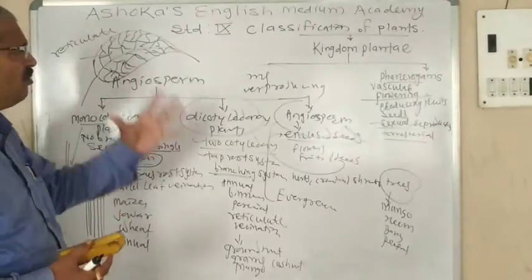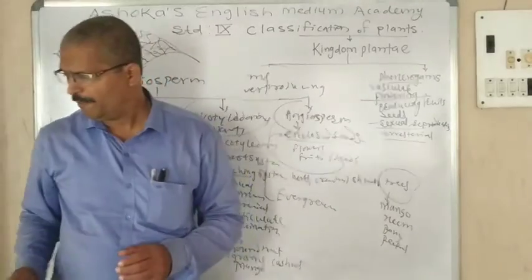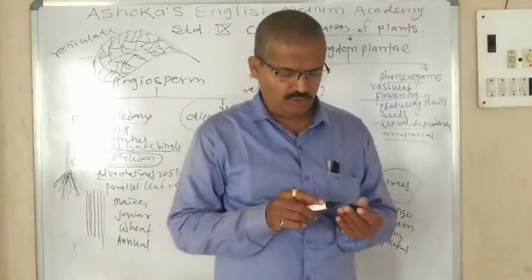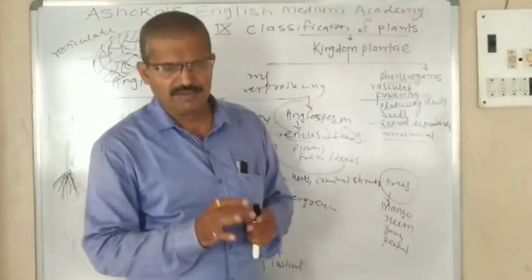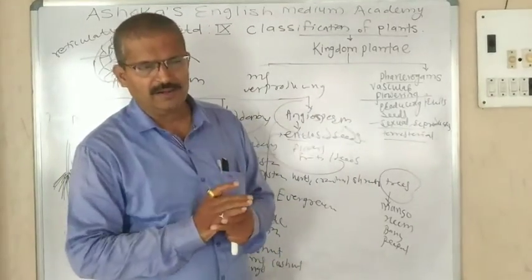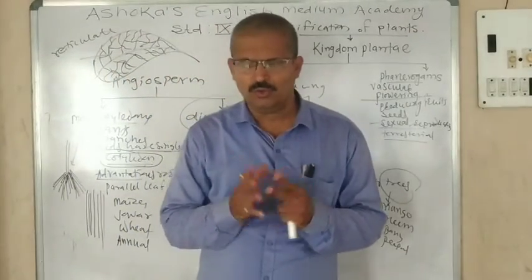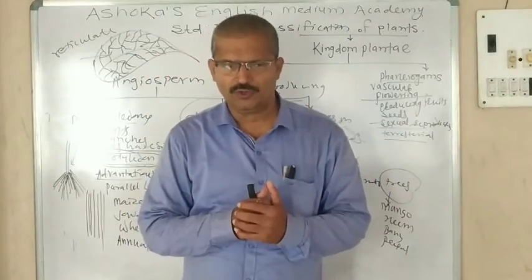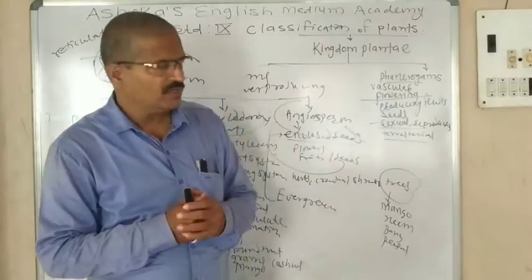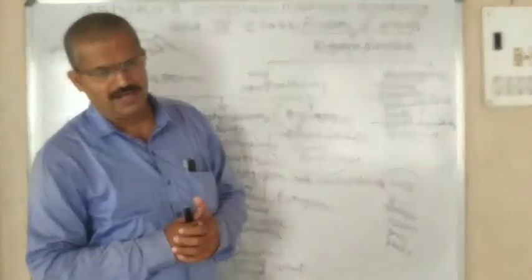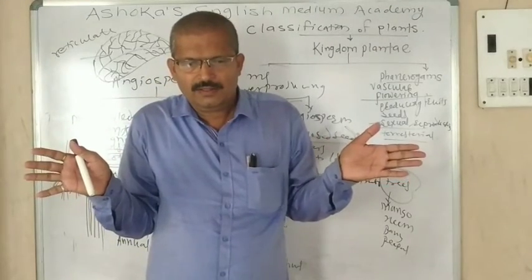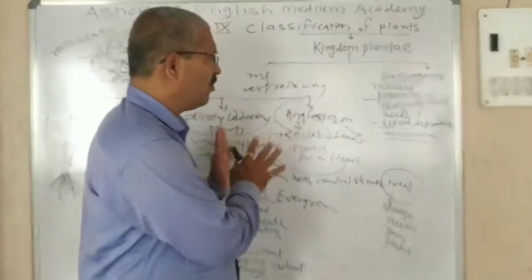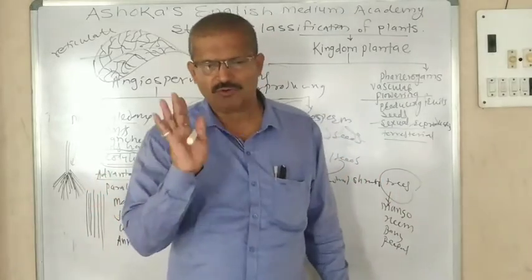Today I have explained the classification of plants — this lesson is now completed. If you have difficulty, observe this video again and again. Subscribe to the channel and read yourself. If you want to look at pictures of these different kinds of plants, go on YouTube — there are many videos available regarding classification of plants. Whatever points are given in your textbook, I have covered all of those points. Thanks.